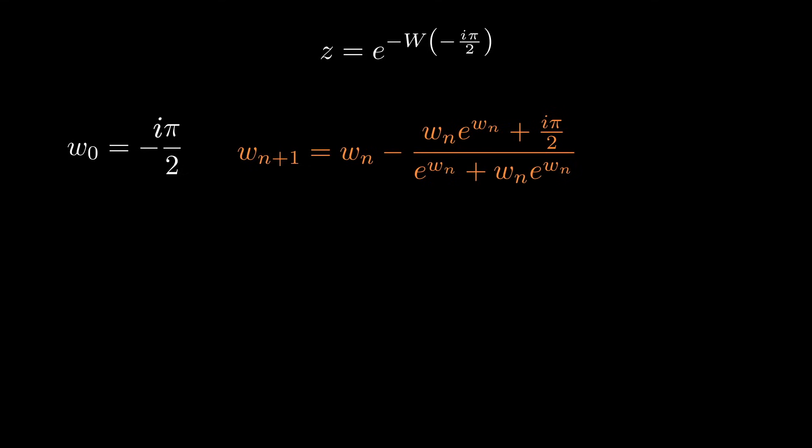I just chose minus i pi over 2 and that seemed to work. There's probably a better selection, but that's what I went with. And this is the point where you basically break out the calculator and just have to keep plugging this in over and over until you get close to what you want.